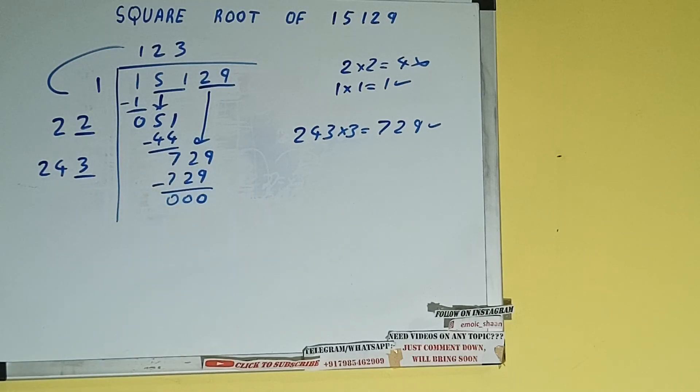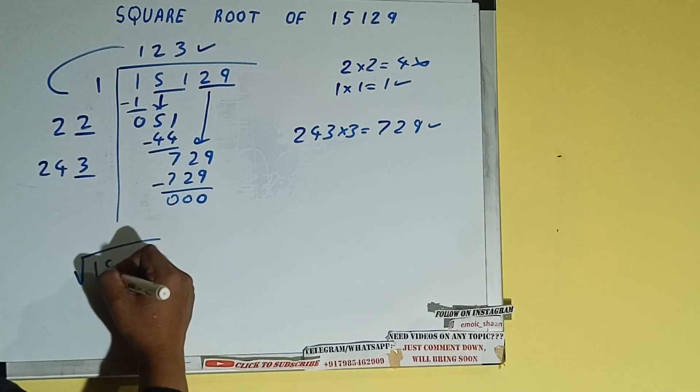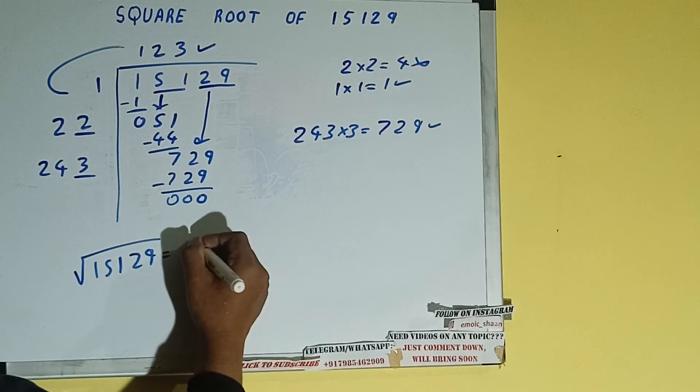So 3 here and 3 here. 729 subtract 0 will be left. Once we get 0, whatever is in the quotient will be the answer, that is 123. So square root of 15129 will be 123.